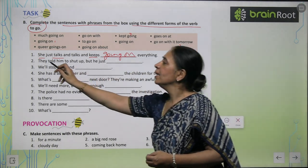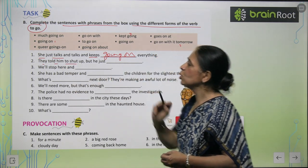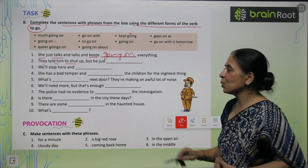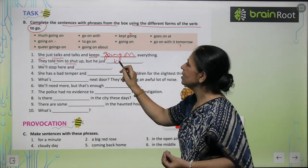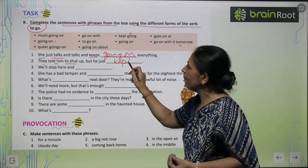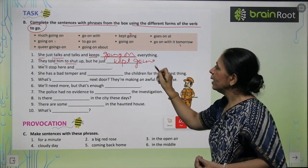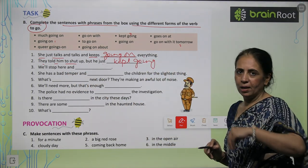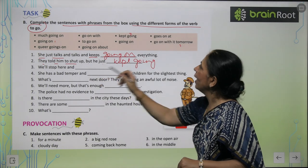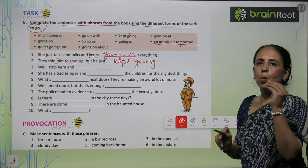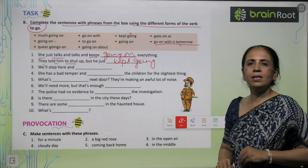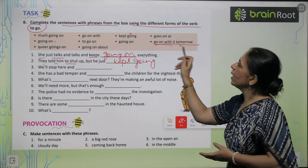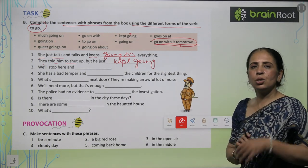Let's take one more sentence: 'They told him to shut up but he just kept going.' We write: he kept going. Next: we will stop here today and go on with it tomorrow. Since we are stopping today and taking it up tomorrow, we write: go on with it tomorrow. Complete the remaining sentences in this way.